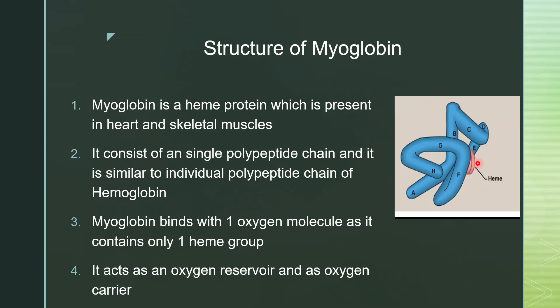Hence, myoglobin serves as an oxygen reservoir and not as an oxygen carrier. It binds with oxygen and only releases it when there is a dire need — such as during strenuous exercise. When the partial pressure of oxygen is very low under conditions of strenuous exercise, the myoglobin present in the muscles releases oxygen to provide energy for muscular activity.